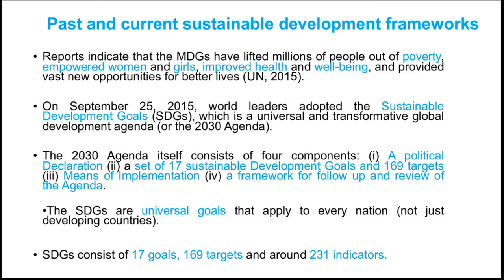The main difference between SDGs and MDGs is that SDGs are much broader, including 17 goals and 169 targets, while MDGs consisted of only eight goals and 21 targets. So the 2030 Agenda is much broader than the MDGs. Another key difference is that SDGs are universal goals that apply to every nation — not just developing countries — unlike MDGs, which were designed mainly for developing countries. SDGs consist of 17 goals, 169 targets, and around 231 indicators.